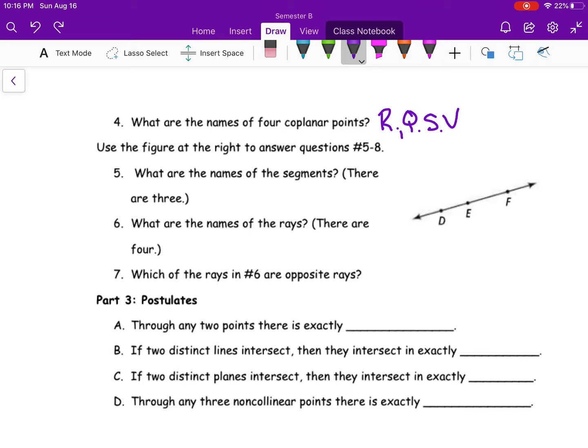What are the names of three segments? So segments are the ones that stop. So we're going to have that straight line above. So segment D, E. I'm just going to pick two points. Segment E, F, segment D, F.